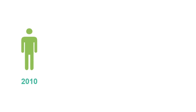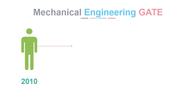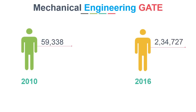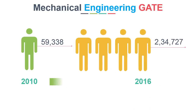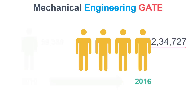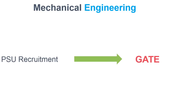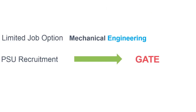In 2010, the total number of candidates in mechanical engineering who appeared for GATE was 59,338, and in 2016 it was 2,34,727 — numbers almost increased by four times in six years. The reason behind this massive increase is PSU recruitment through GATE and limited job options in mechanical engineering after graduation.